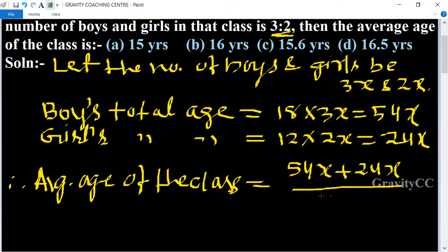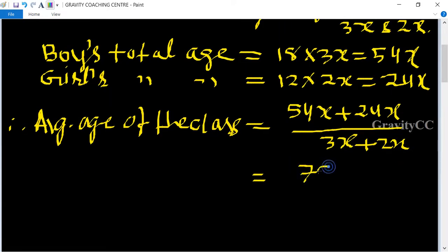So here x cancels, and 78 by 5 equal to 15.6 years, which is the required answer.